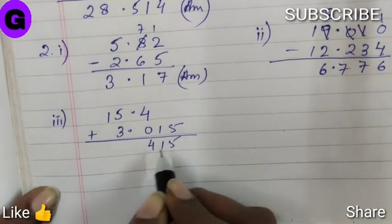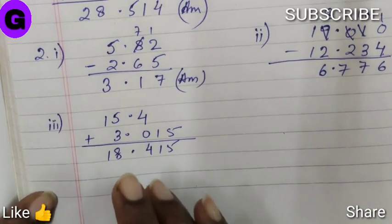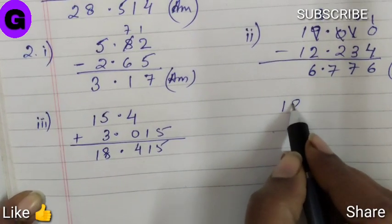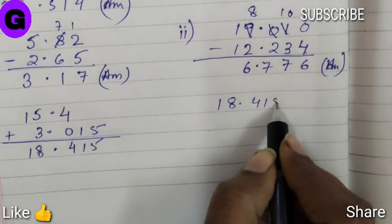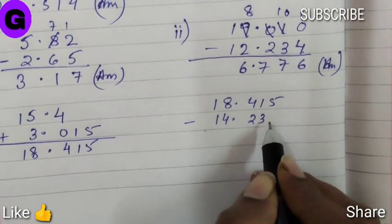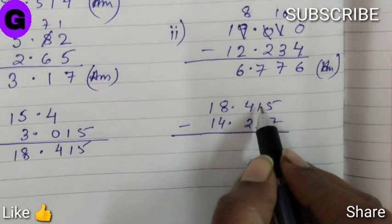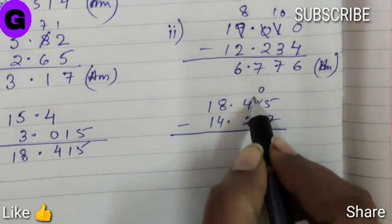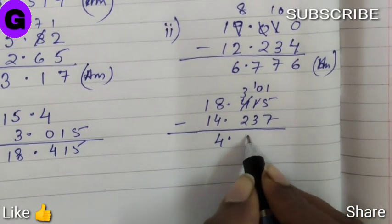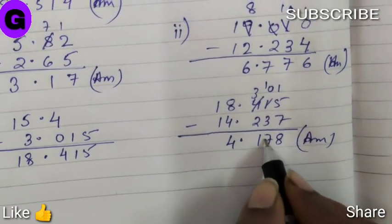So we got the answer 18.415. Now from this answer we have to subtract 14.237. So let us write, copy the digits here, minus 14.237. Now we know the process how to subtract. So we got the answer 4.178.